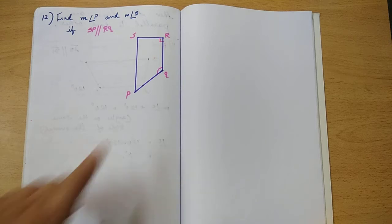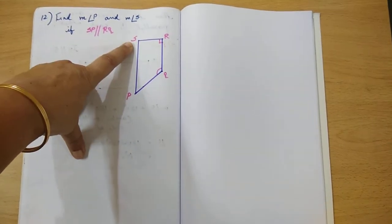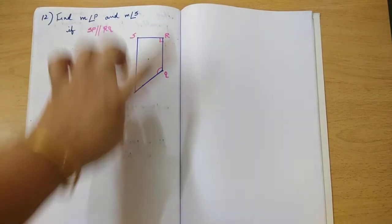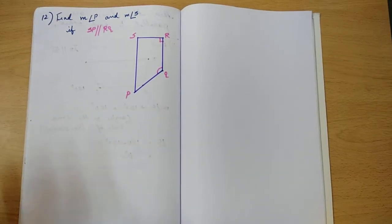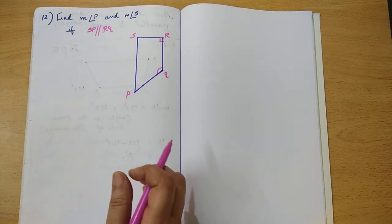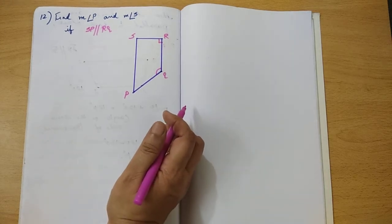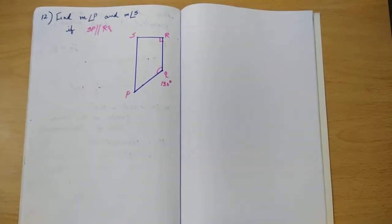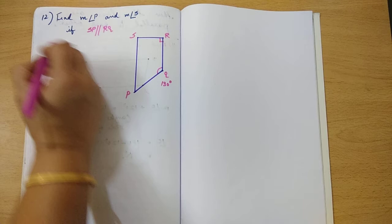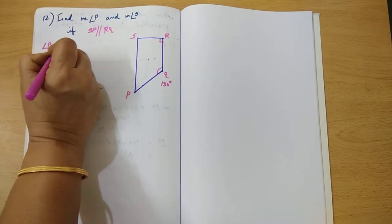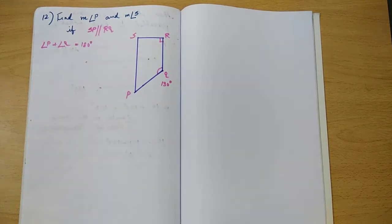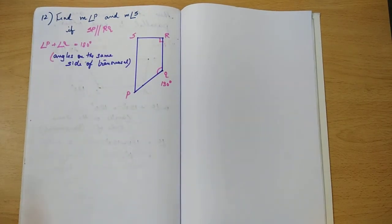You should find the angle P and the measure of angle S. So what is given to you? Given SP is parallel to RQ and also given that angle Q is equal to 130 degrees. So what do we know? Angle P plus angle Q should be equal to 180 degrees. Why?